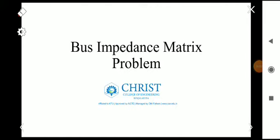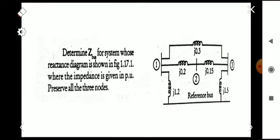Hi all, welcome to another video on subject process analysis based on the KT syllabus. We are on module 3 and today we are going to discuss a problem based on the bus impedance matrix. The problem is to determine the Z-bus for a system whose reactance diagram is shown in the figure, where impedances are given in per unit. We have to preserve all three nodes.